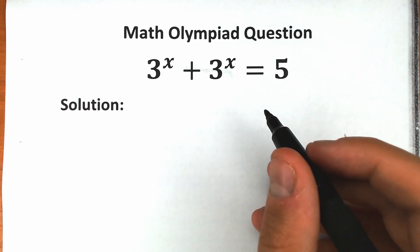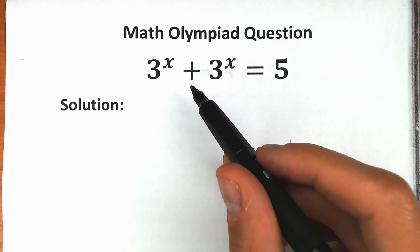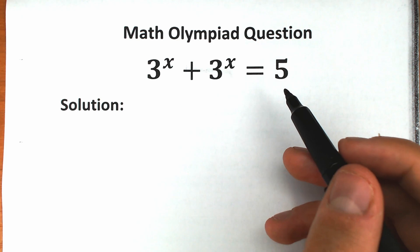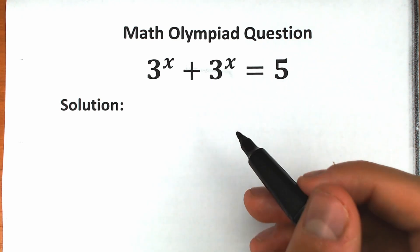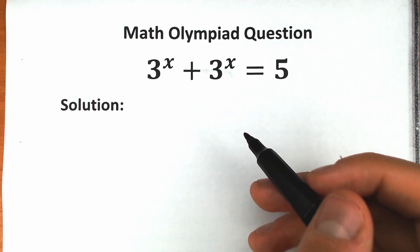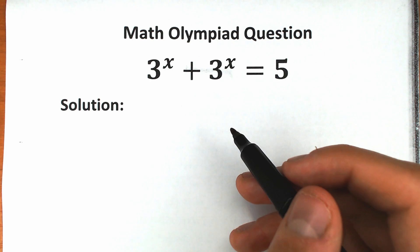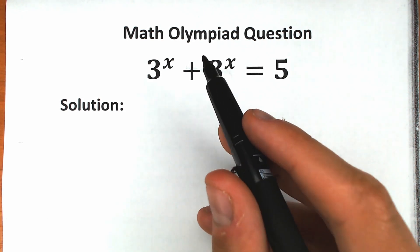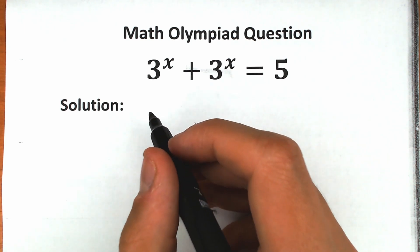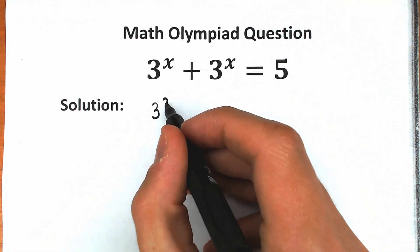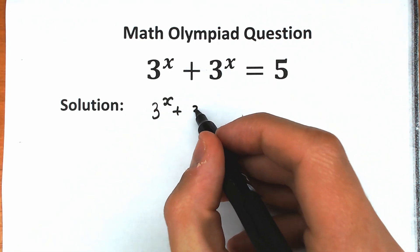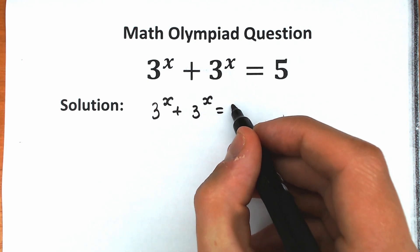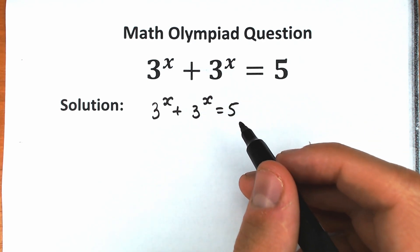Welcome back to my channel MathMode and really interesting challenge today: 3 to the x plus 3 to the x equal to 5. Exponential equation seems pretty basic, seems pretty easy. However, many people are going to get this problem incorrect, so in this video I'm going to fully explain how to solve it correctly and step by step. Let's rewrite this question: 3 to the x plus 3 to the x equal to 5.